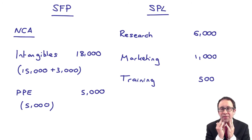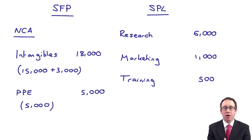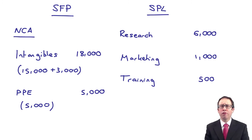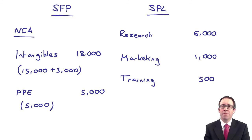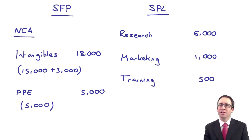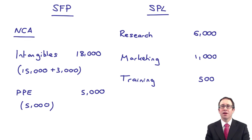You could also think about things from a statement of cash flow perspective. You've spent money this year on the purchase of intangibles and the purchase of PPE, so the intangibles outflow will be $18 million and the PPE outflow will be $5 million. These would fall within investing activities within the statement of cash flow. Just be aware that additional aspects might appear with regards to the newer accounting standards.